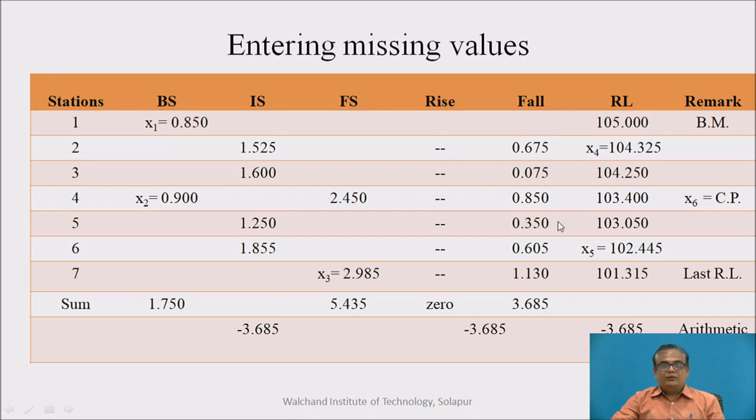Now, which next reading we can find? Here, we can see backside reading and foresight reading, both are written in the same row. What this indicates? This indicates that there must be a change point here, because at change point, we know, there are two readings taken on the same staff. So, they are written in the same position, one from the previous instrument position and one from the new instrument position. So, here, there must be a remark in the form of X6 equal to change point, because X6 is a missing remark. So, change point must be written in place of X6. So, this also we have got.